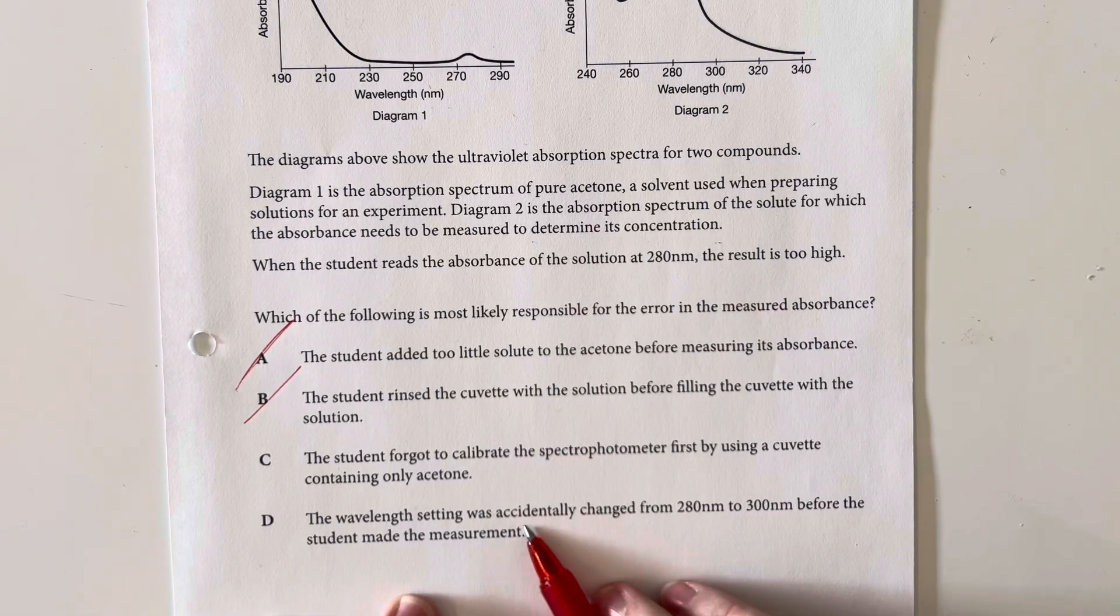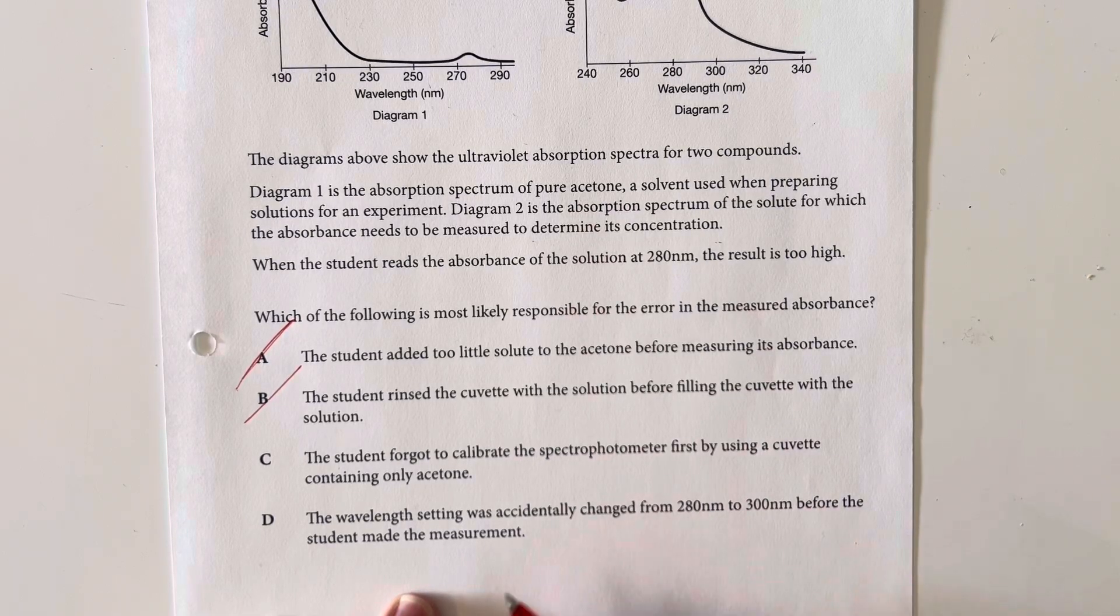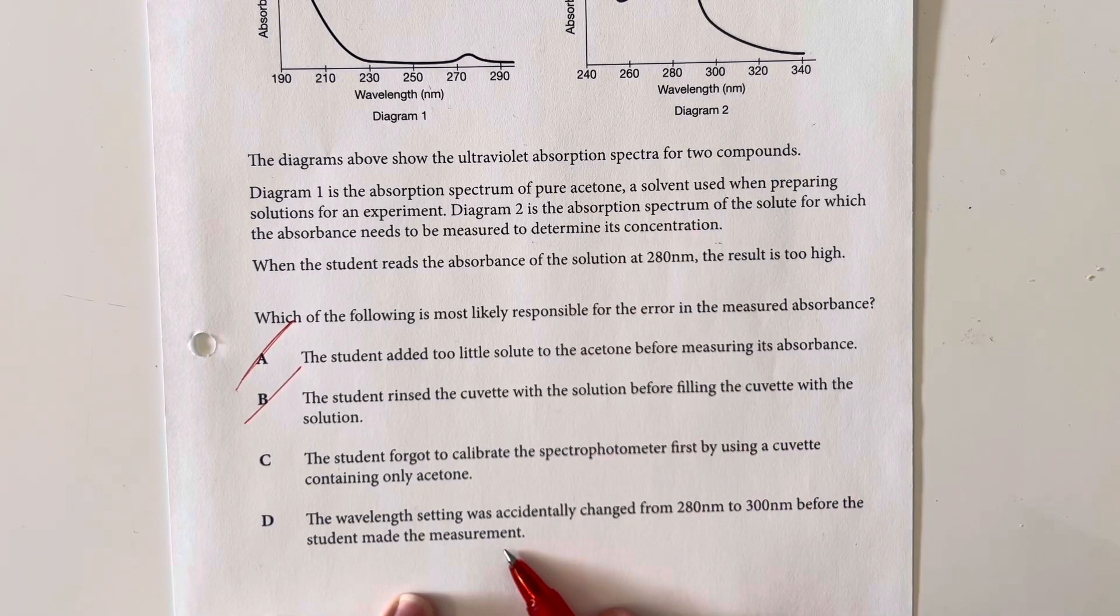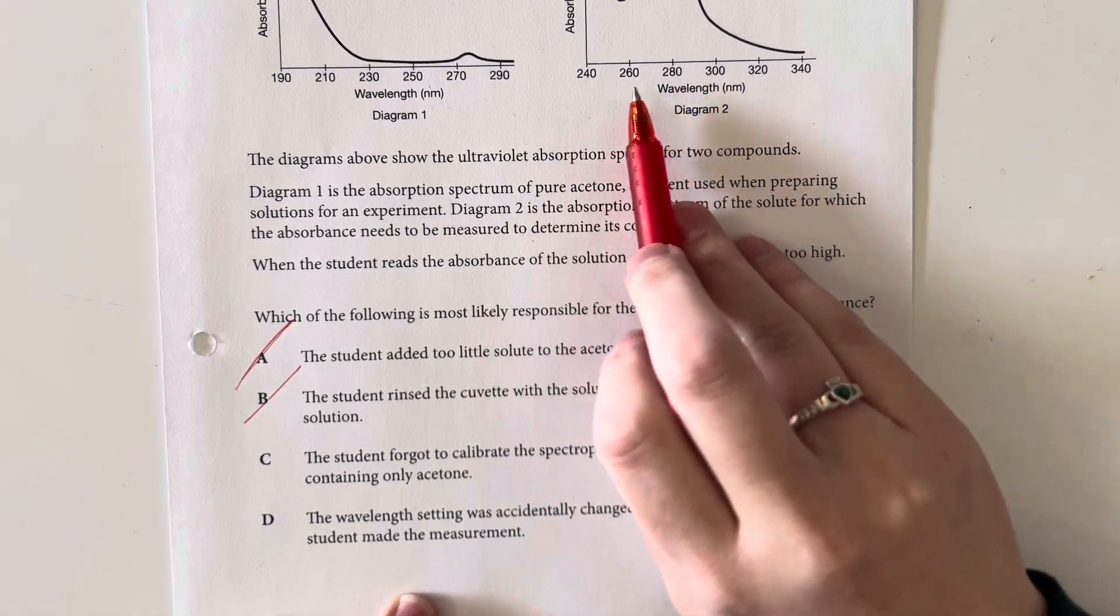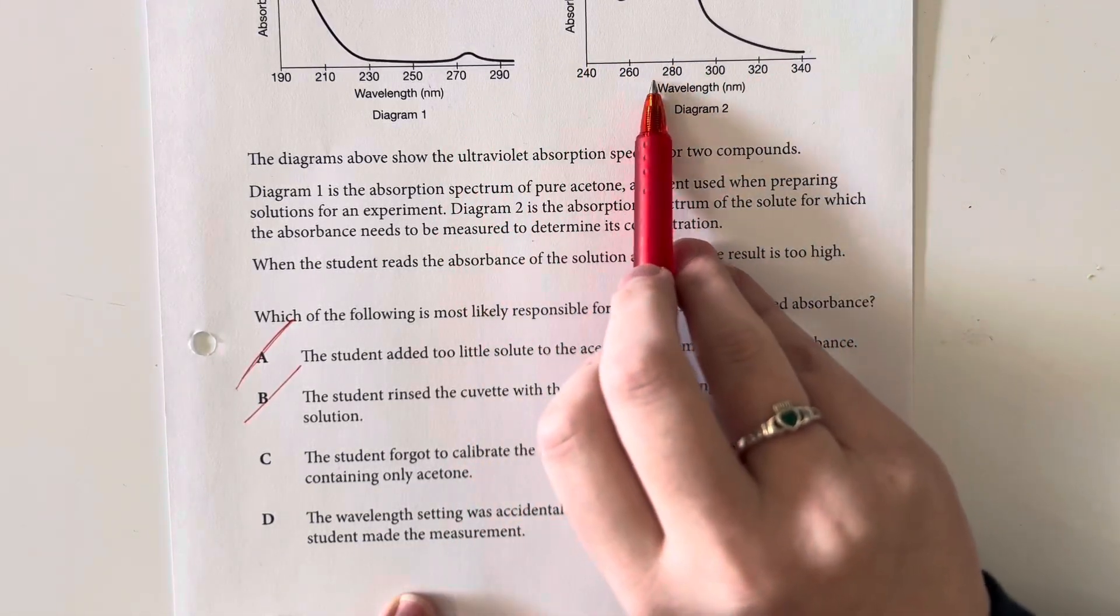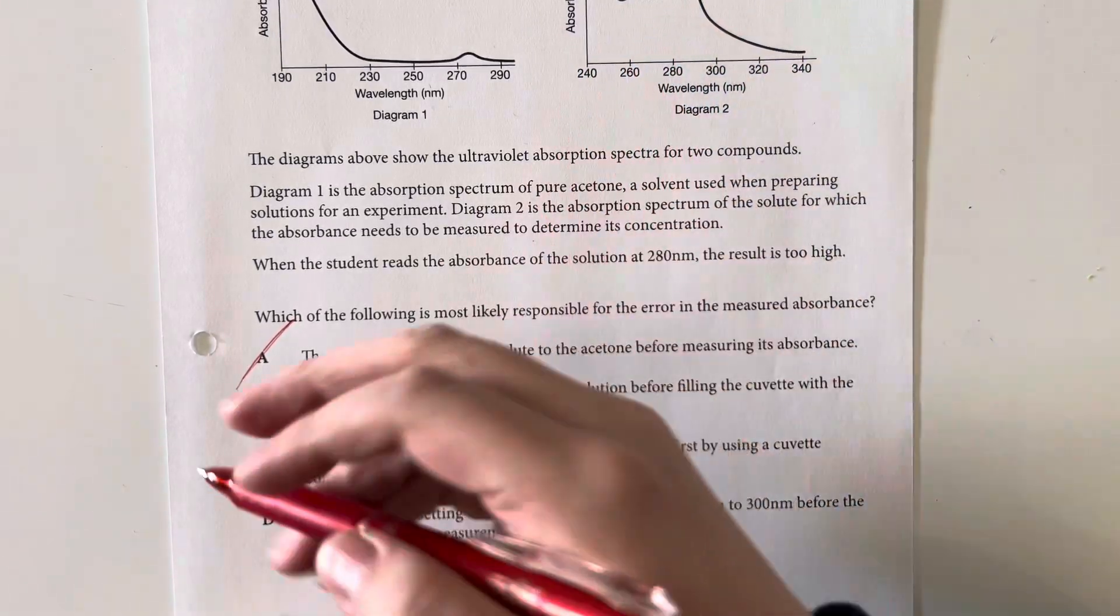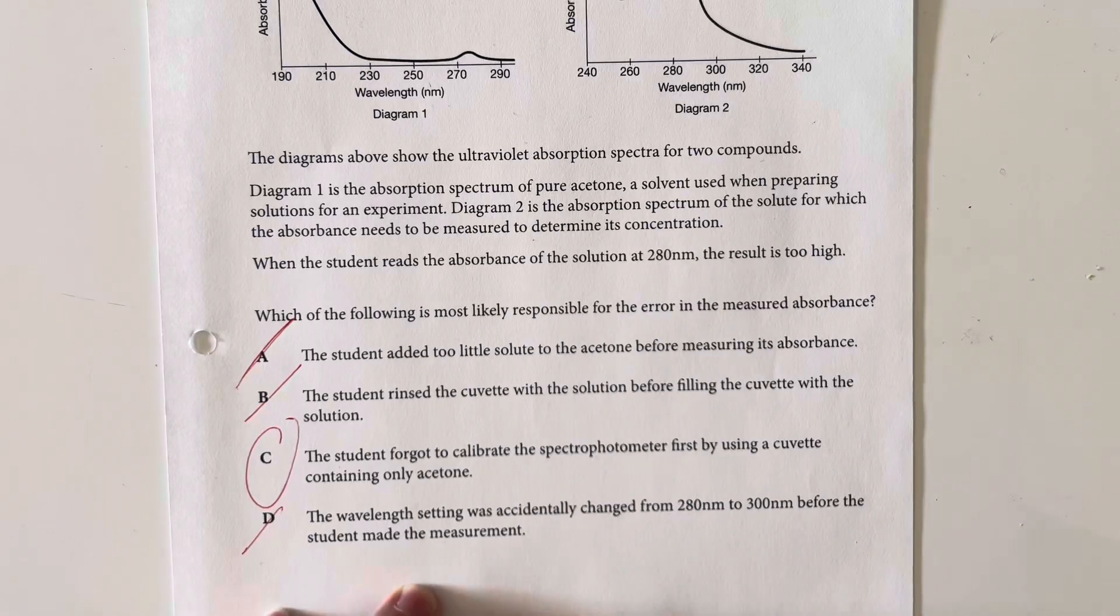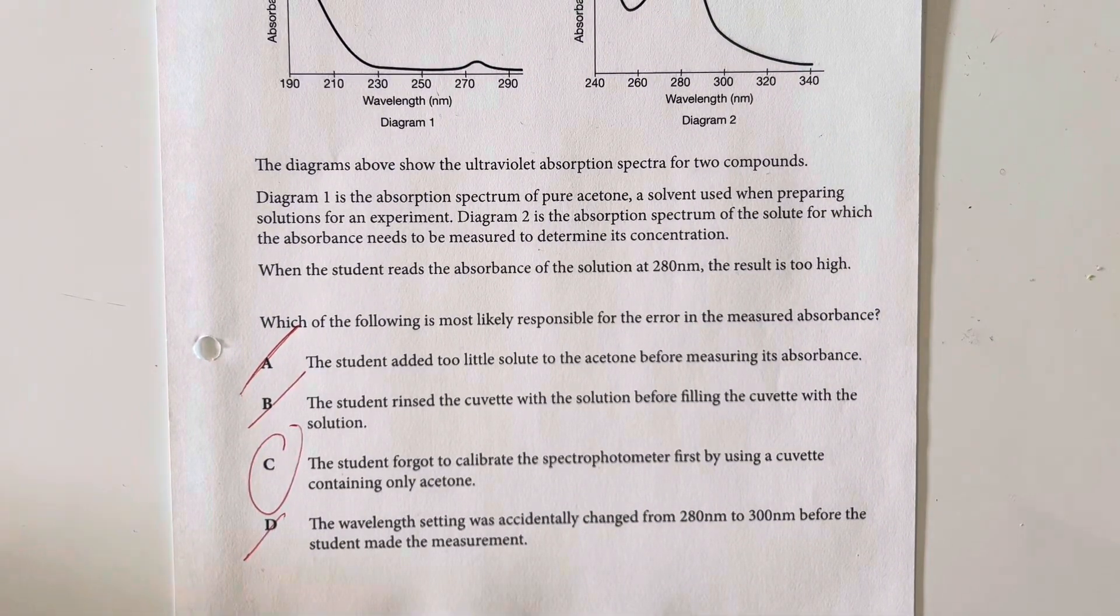And the wavelength setting was accidentally changed from 280 nanometers to 300 nanometers before the student made the measurement. That is not going to change the fact that we still have an absorbance that is too high here. So option choice C is going to be our best choice.